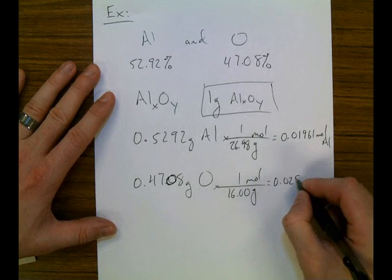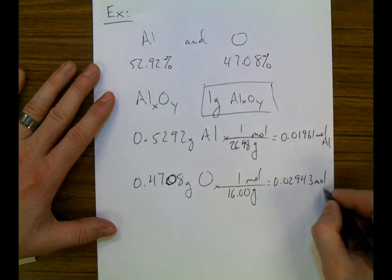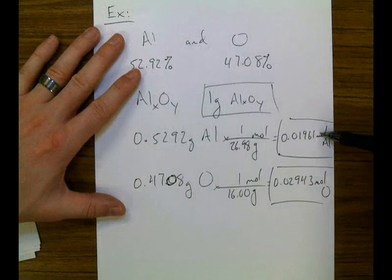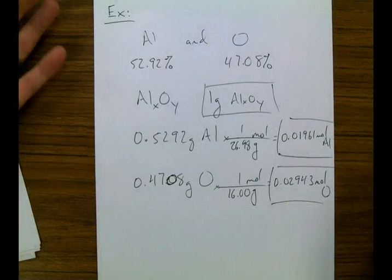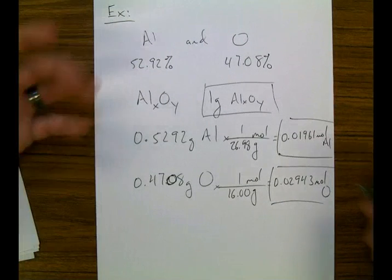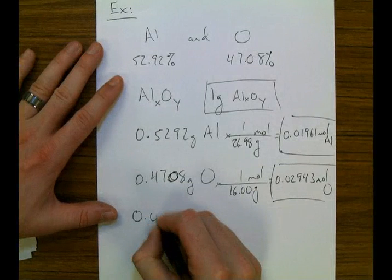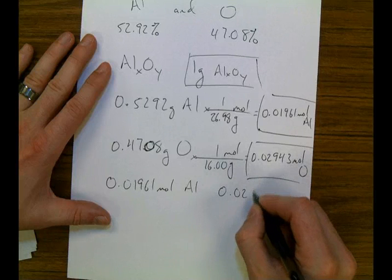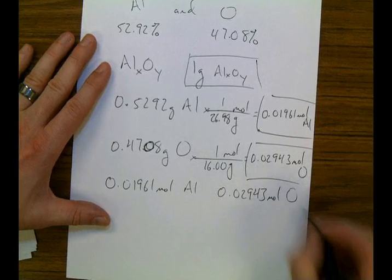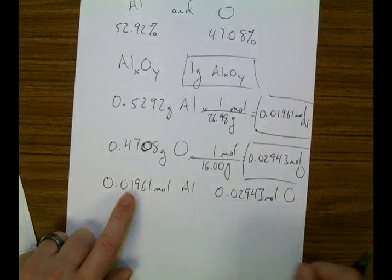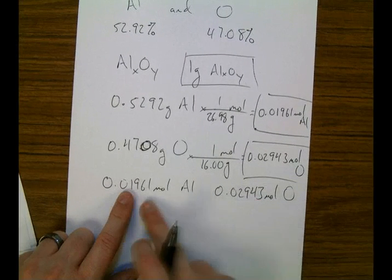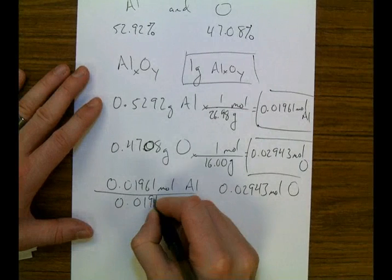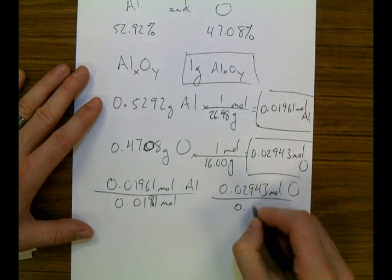And for oxygen I have 0.02943 moles. Now I know my ratio between aluminum and oxygen. But unfortunately these numbers don't make a whole lot of sense — it would be kind of pointless to write these between x and y. We need to simplify these numbers to figure out the ratio. So what you do is take both of these numbers — my moles of aluminum and my moles of oxygen — compare them, and figure out which one is smaller. The aluminum looks to be a little bit smaller. So I'm going to divide each of these numbers by the smaller of the two, 0.01961 moles.